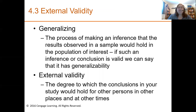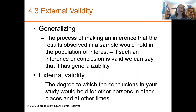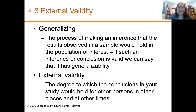Generalizing is the process of making an inference that the results observed in the sample would hold in the population of interest. If such an inference is valid, we say it has generalizability. External validity goes right along with this — it's the degree to which the conclusions in your study would hold for other persons, other places, other times. It's how well and how far from what we study we can actually generalize.